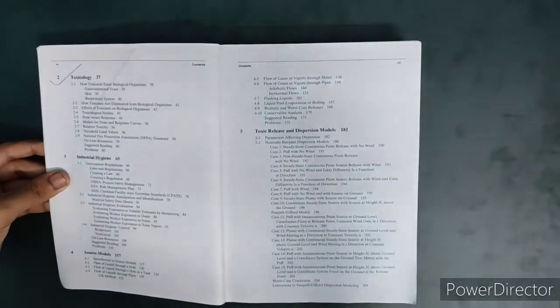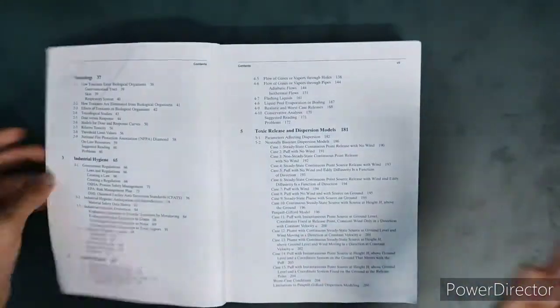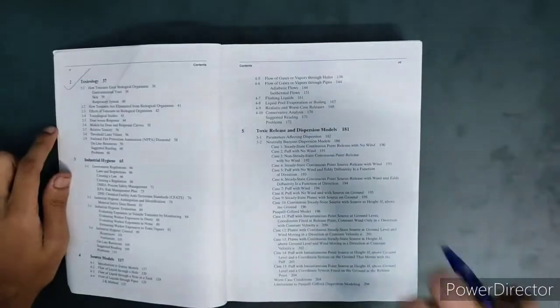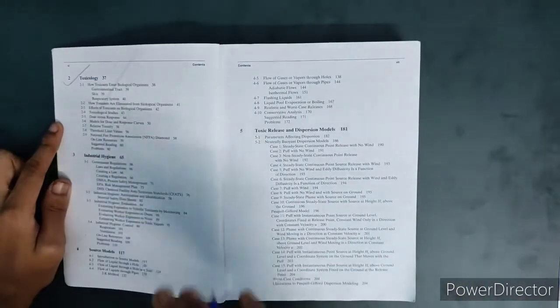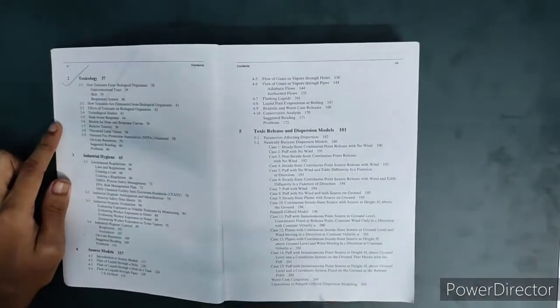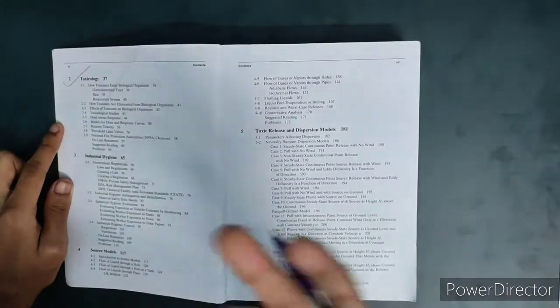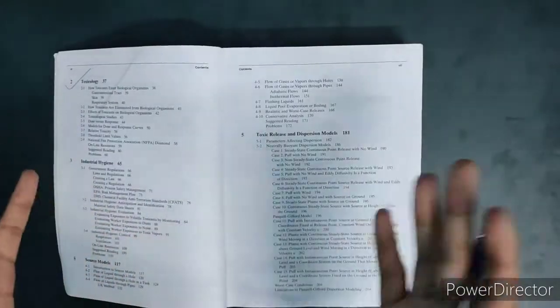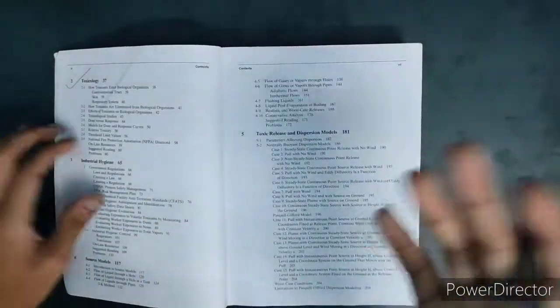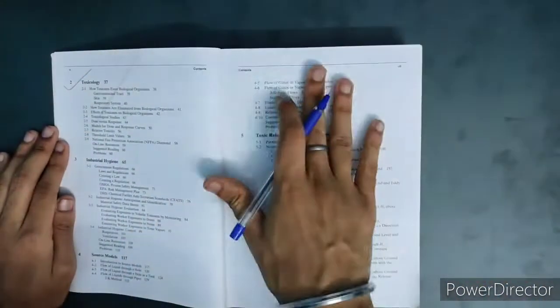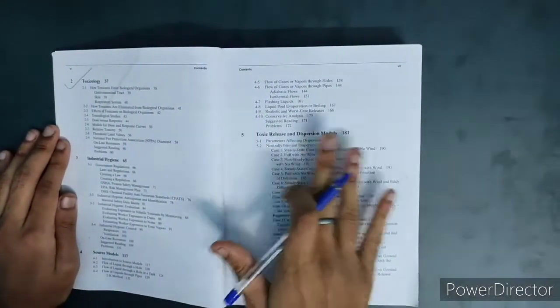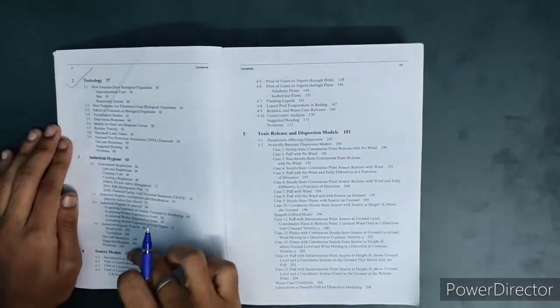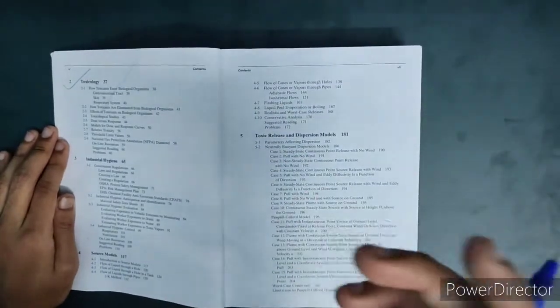Apart from process safety, you are getting industrial hygiene also. The fourth chapter is your source models. If any chemical got released from any pressure vessel or from any pipeline, how it will disperse, how it will move in the normal environment - you are going to study here in the source models. Fifth one is your toxic release and dispersion models.